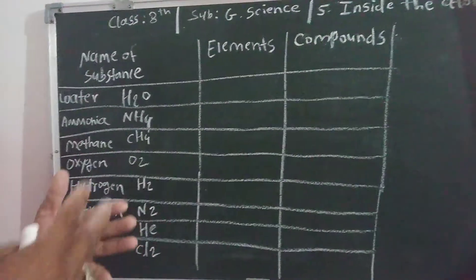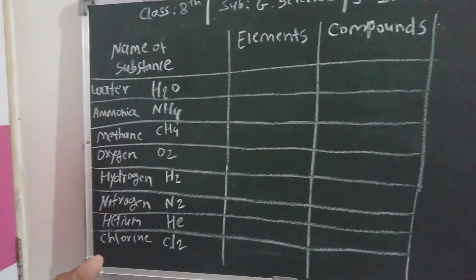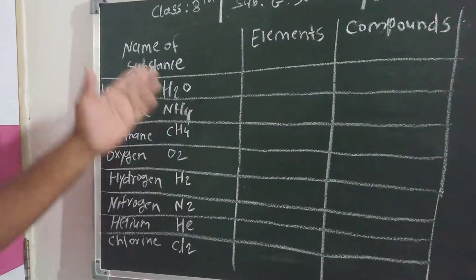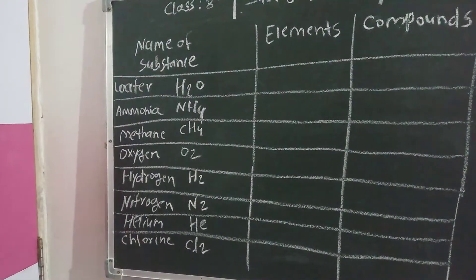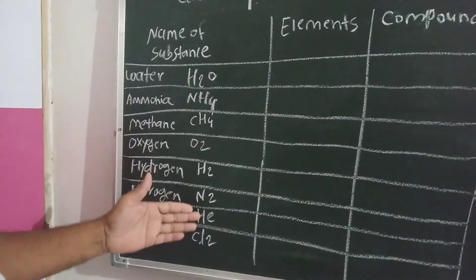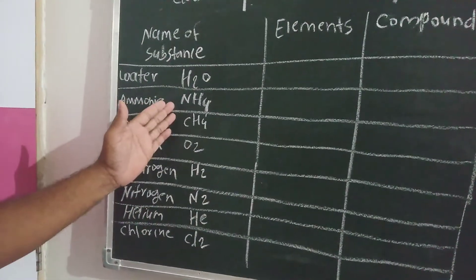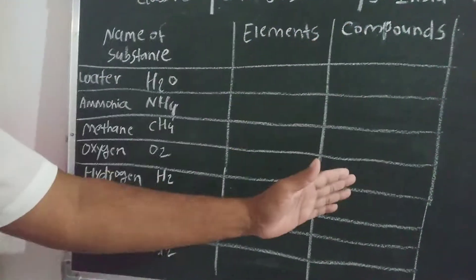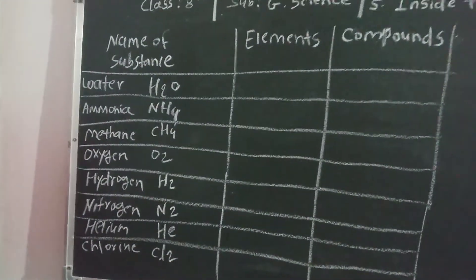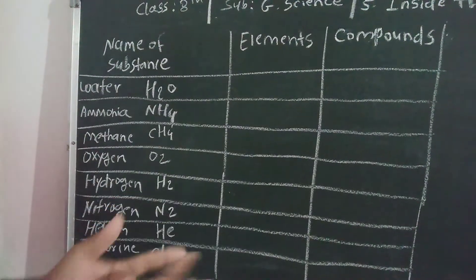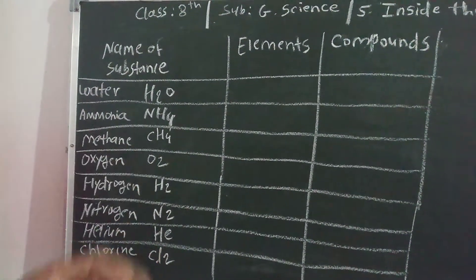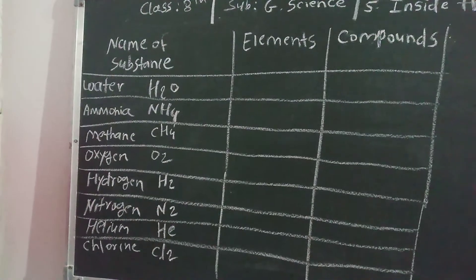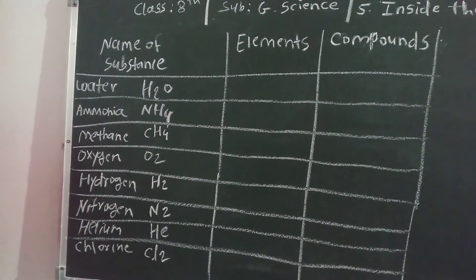We will learn how to identify which are the elements and which are the compounds. Some examples are given here, and from these examples we have to identify which are elements and which are compounds — what is the trick, what is the formula, what is the base to identify elements and compounds.